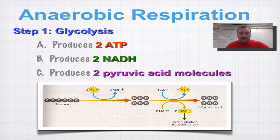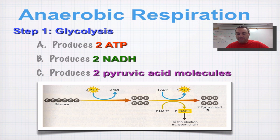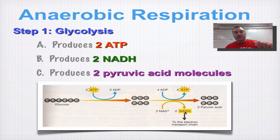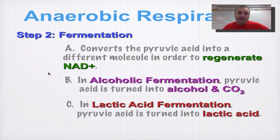In glycolysis you spend 2 ATP to cut the glucose in half, then you go through a series of steps where you rearrange these carbon molecules to form pyruvic acid. When you do that you get 4 ATP, but because you spent 2 ATP your net gain is only 2 ATP. Then here are your electrons in the form of NADH. If you want to know more about this, go watch the screencast on glycolysis.